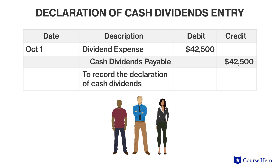Suppose that the board of directors of company ABC declares a cash dividend of forty-two thousand five hundred dollars on October 1st. The date of record is November 1st and the date of payment is December 1st. The dividend is recorded as an expense, a debit, on the date of declaration. On that same date, it becomes a liability in the company's books.